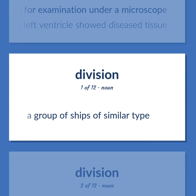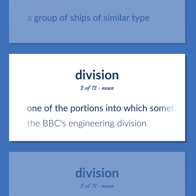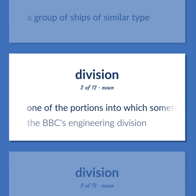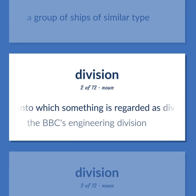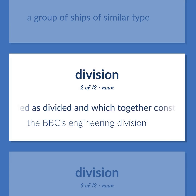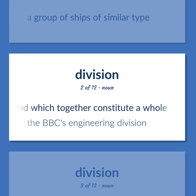Section: a group of ships of similar type. Division: one of the portions into which something is regarded as divided and which together constitute a whole — for example, the BBC's engineering division.